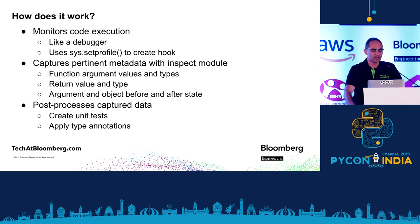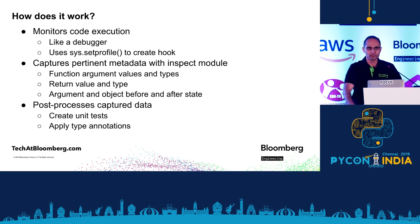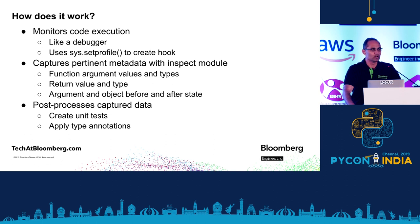But how does it work? PUTO works by monitoring code execution, very much like a debugger. It creates a hook in the interpreter using sys.set_profile, and once it gets a callback for a function of interest, it captures a bunch of metadata from that call. The things it captures are things like function argument values, return value, and argument state before and after the call. It also captures the type information for that call, and it does that every time the function is called. Once it has all this metadata, it is able to create unit tests and apply annotations.